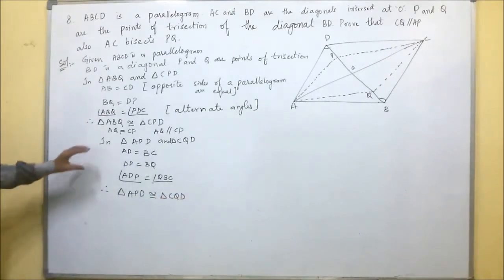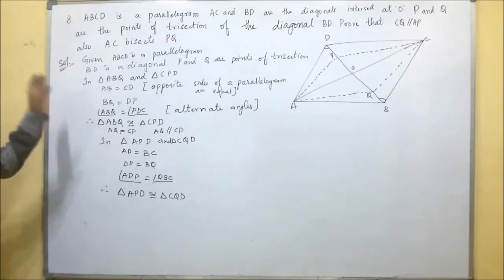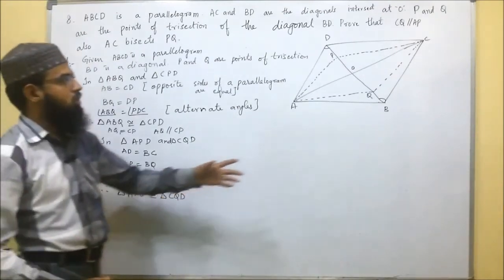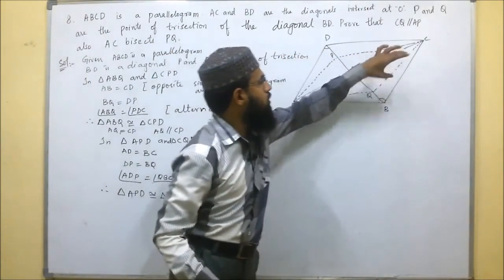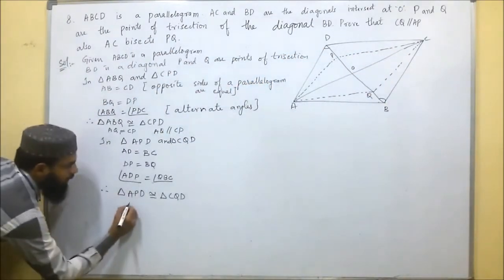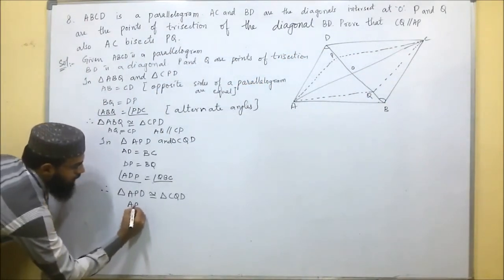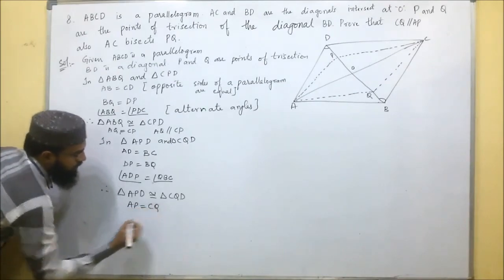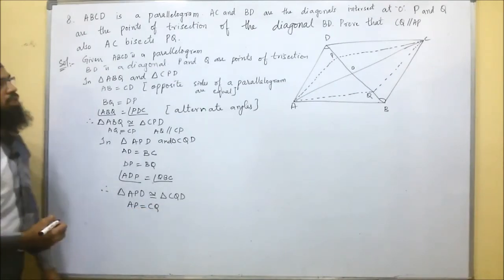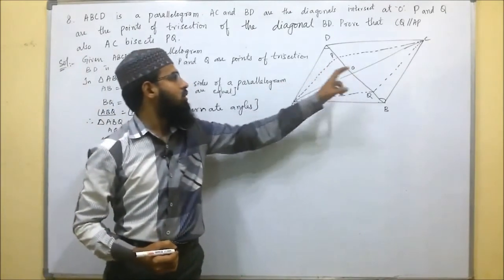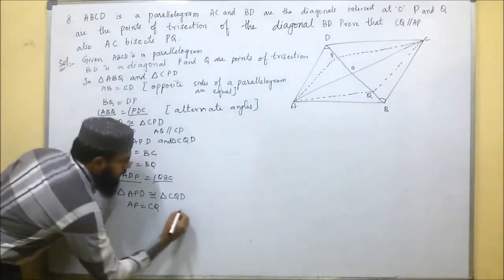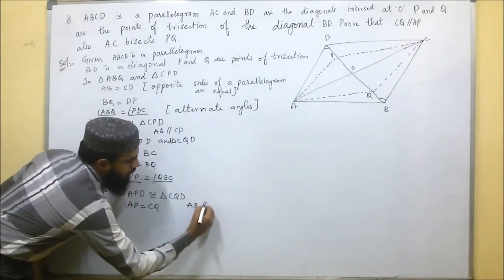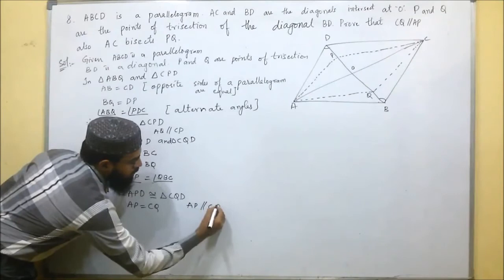Since these triangles are congruent, their corresponding parts are equal. So AP is equal to CQ. It is also parallel, so AP is parallel to CQ.